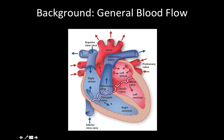When systole occurs, the right ventricle contracts, pushing blood through the pulmonary valve, the pulmonary trunk, and out the pulmonary arteries to the lungs. The lungs oxygenate the blood and return it through pulmonary veins into the left atrium. When the left atrium contracts, blood enters the left ventricle, and when the left ventricle contracts, it pushes blood past the aortic valve, out the aorta, and to the rest of the body.